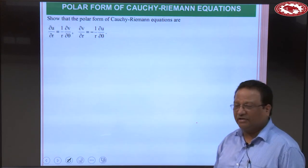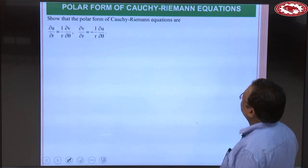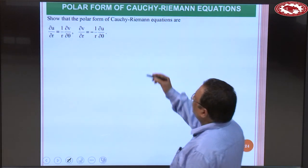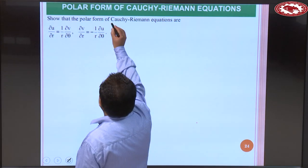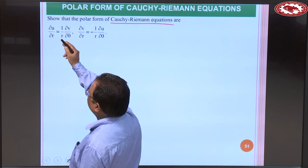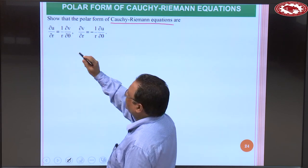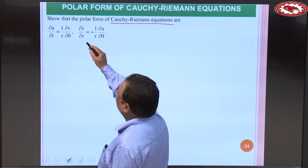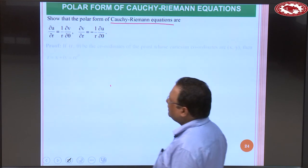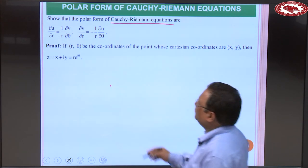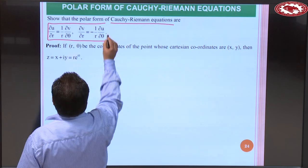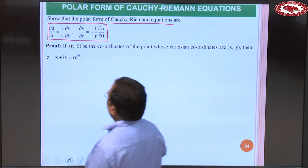Now let us look at the polar form of the Cauchy-Riemann equations. We need to show that the polar form of CR equations are: ∂u/∂r = (1/r)·∂v/∂θ and ∂v/∂r = −(1/r)·∂u/∂θ.